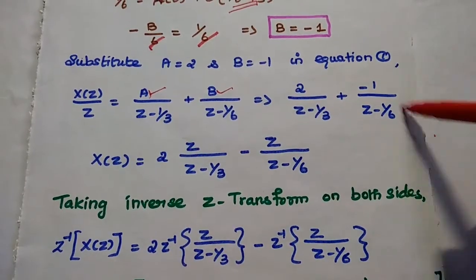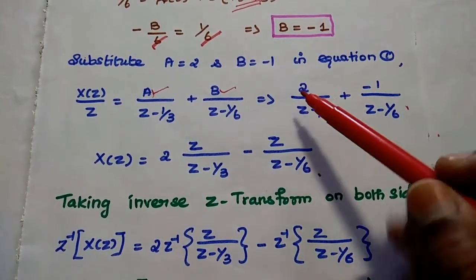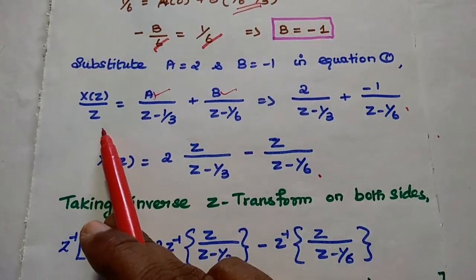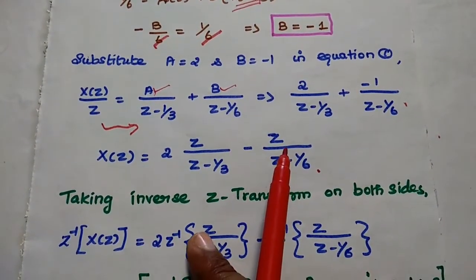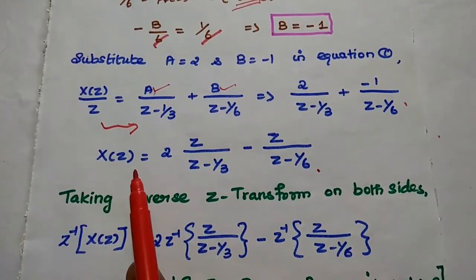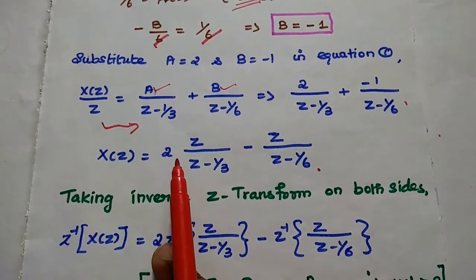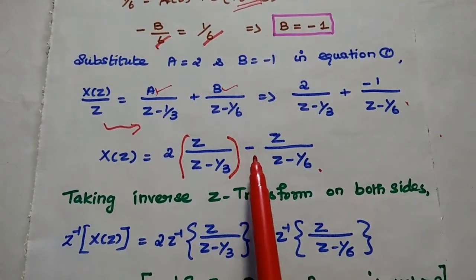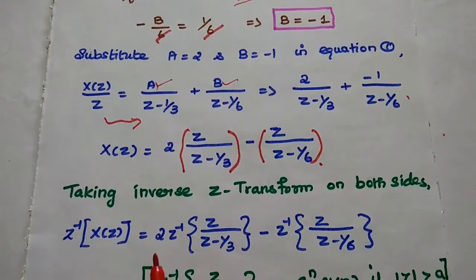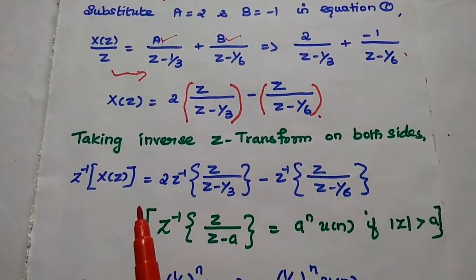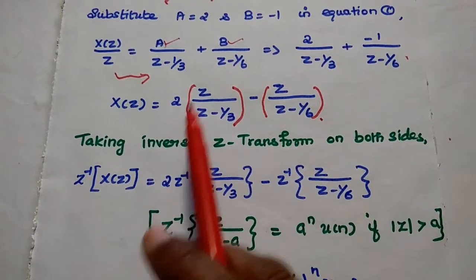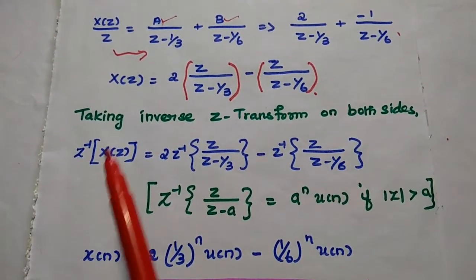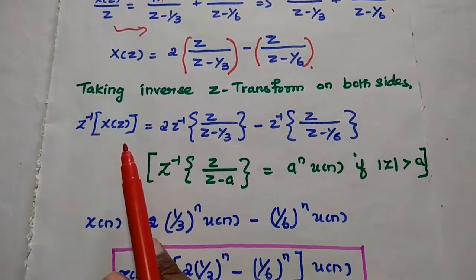Important point: first, Z was moved to the left-hand side (denominator), and in the last step we bring it back to the right-hand side (numerator). So now we can write X(Z) = 2·[Z/(Z - 1/3)] - 1·[Z/(Z - 1/6)]. Now we apply the inverse Z-transform.